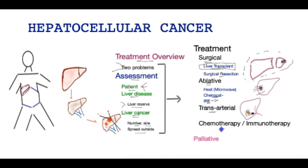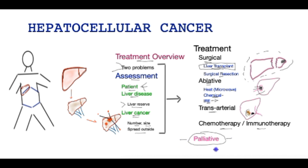Lastly, for patients who are not suitable for the above treatment options, chemotherapy and more recently immunotherapy may provide an improvement in survival, but are not curative. Unfortunately, a significant number of patients may not be suitable for any of the above treatment options, and keeping their symptoms at bay as well as improving quality of life is the most important consideration. This concludes a brief overview of the treatment of liver cancer.